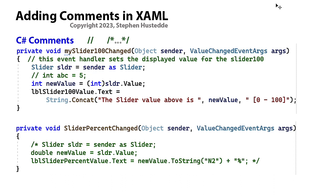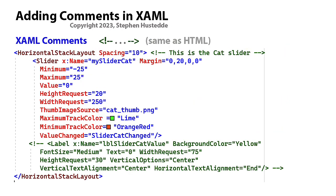But if you tried either of those methods in XAML, you know that it doesn't work. So how do we write comments in XAML? Well, it's the same as HTML if you've done any web development. We have an opening tag of less-than exclamation hyphen hyphen, and an ending tag of hyphen hyphen greater-than. We can create comments outside of tags — in this case, the comment 'this is the cat slider' is placed between the horizontal stack tag and the slider tag.